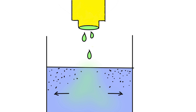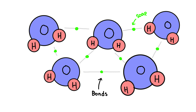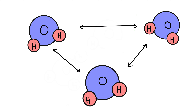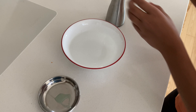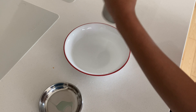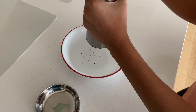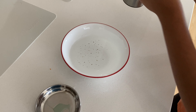Why does the water move to the side? Why does soap break the surface tension? Well, what happens is that when soap breaks the surface tension, soap particles go into the molecules of the water — they move between the molecules — which makes the water molecules spread farther apart and makes the bond break. So the water moves to the side, and because it moves to the side, the pepper is moved along with it.